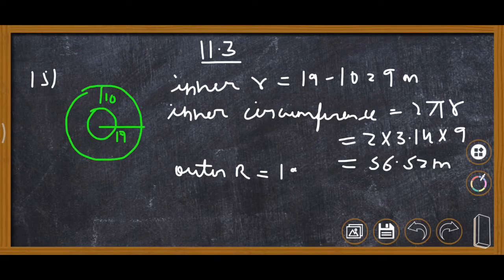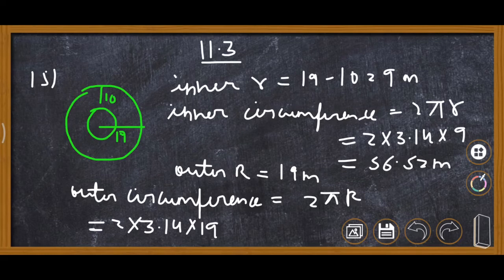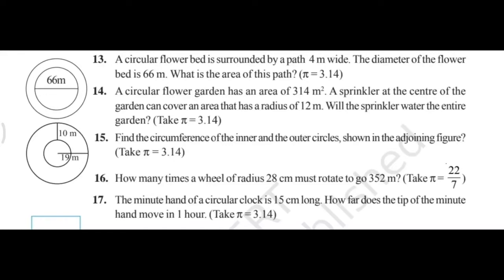The outer radius is 19 meter. Now we find the outer circumference using the formula 2 pi r: 2 multiplied by 3.14 multiplied by 19 equals 119.32 meter. So these are the circumferences of the inner and outer circles.